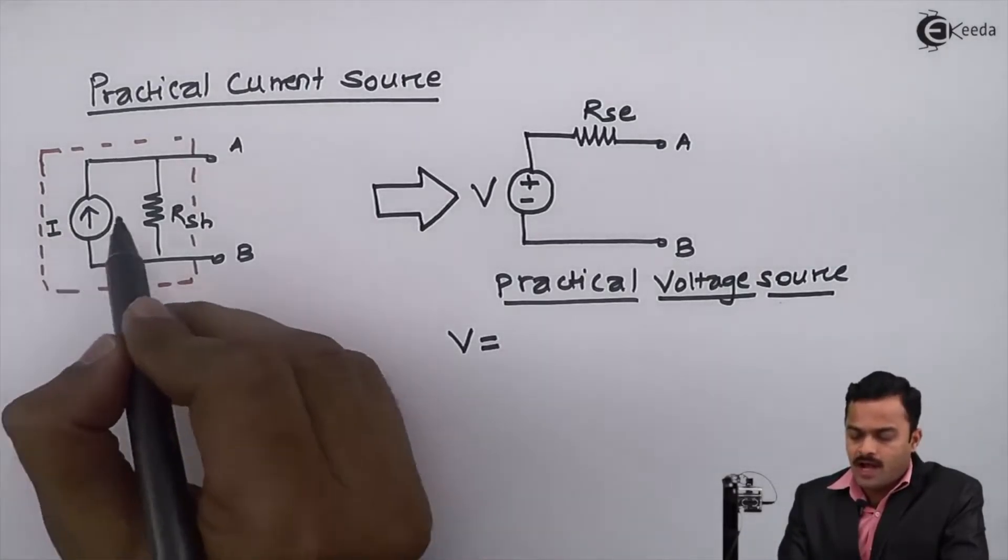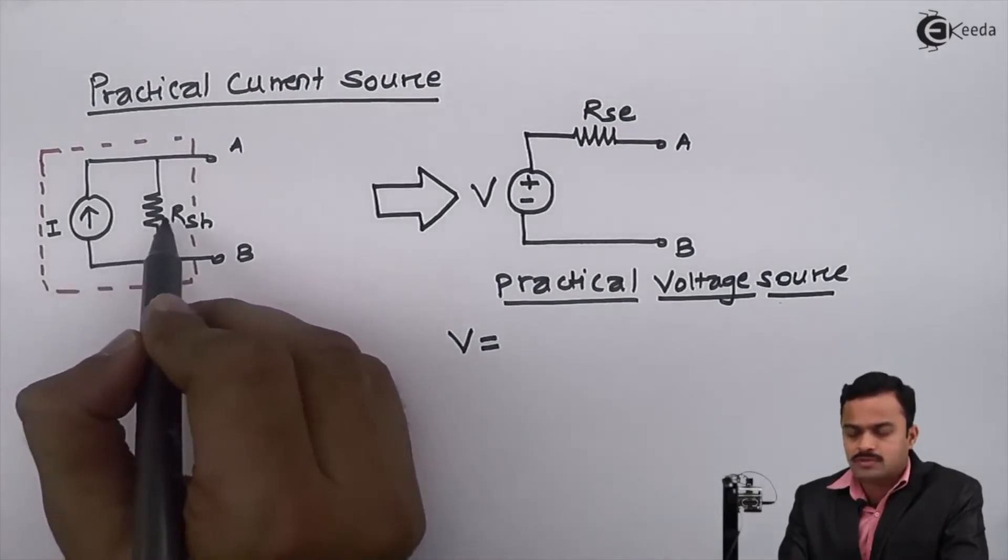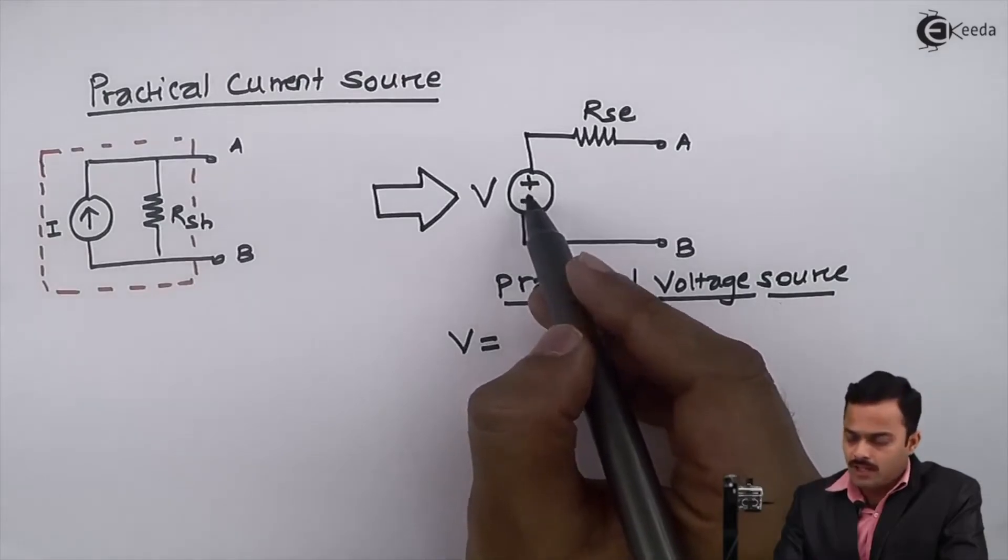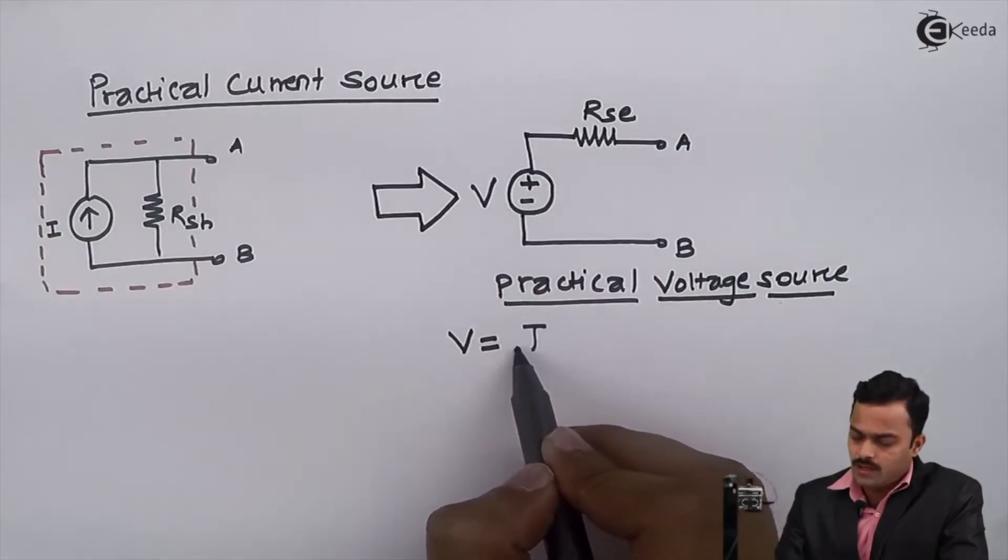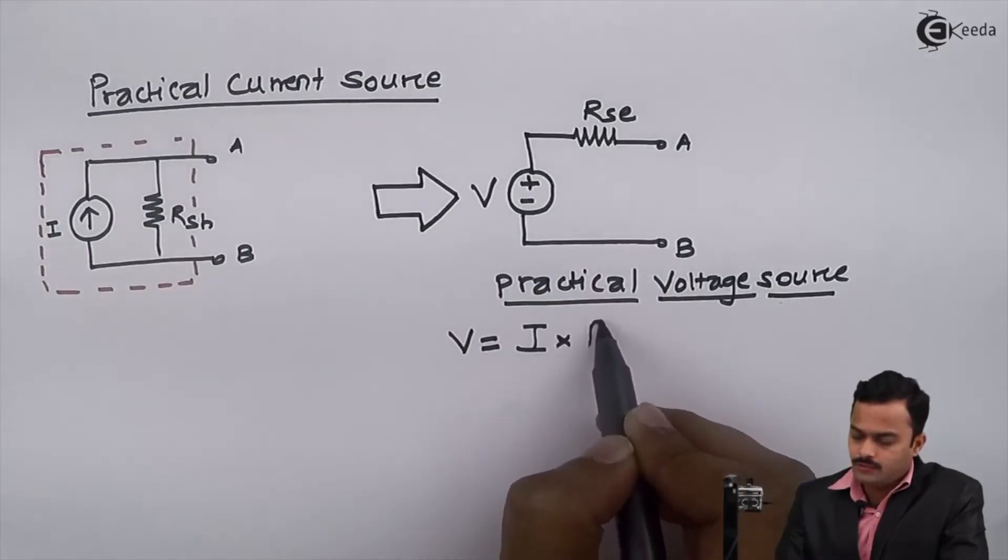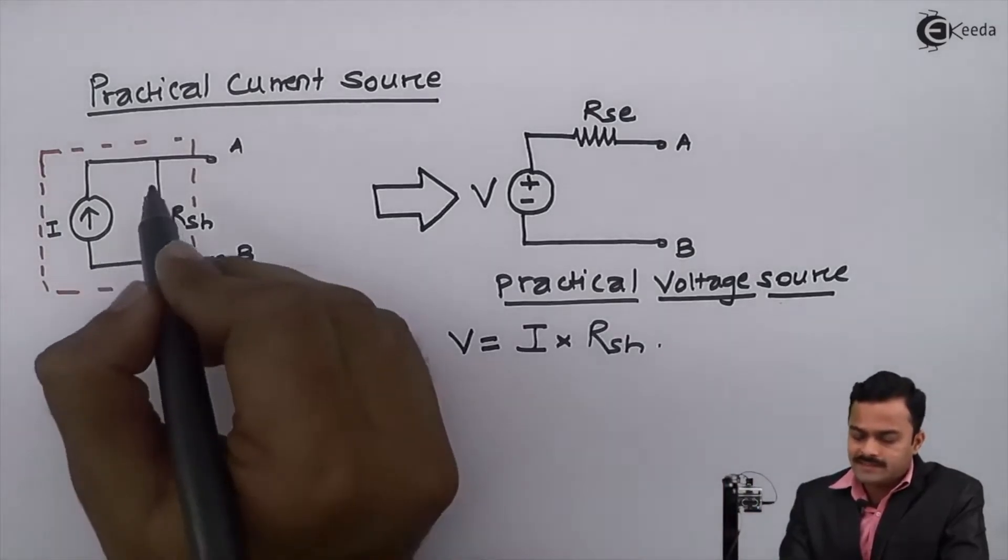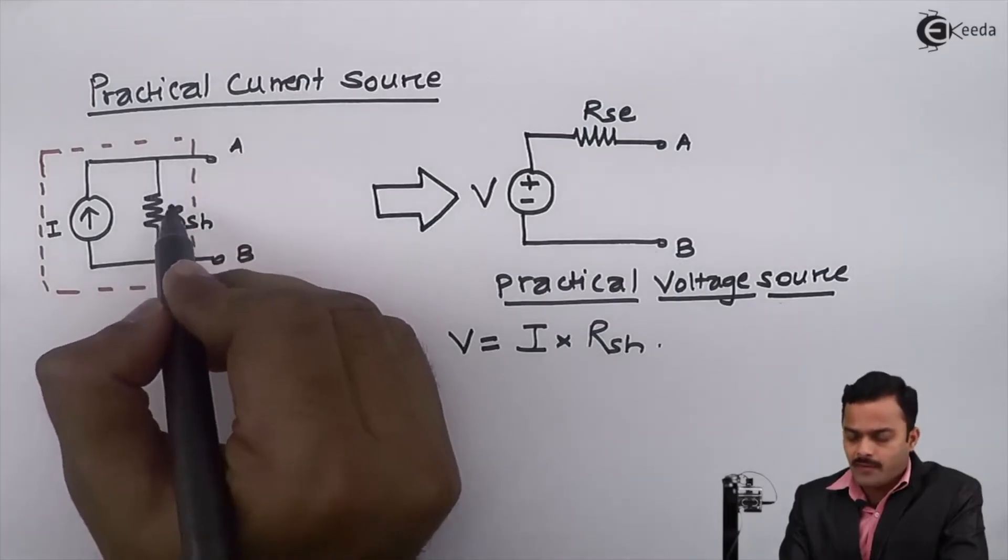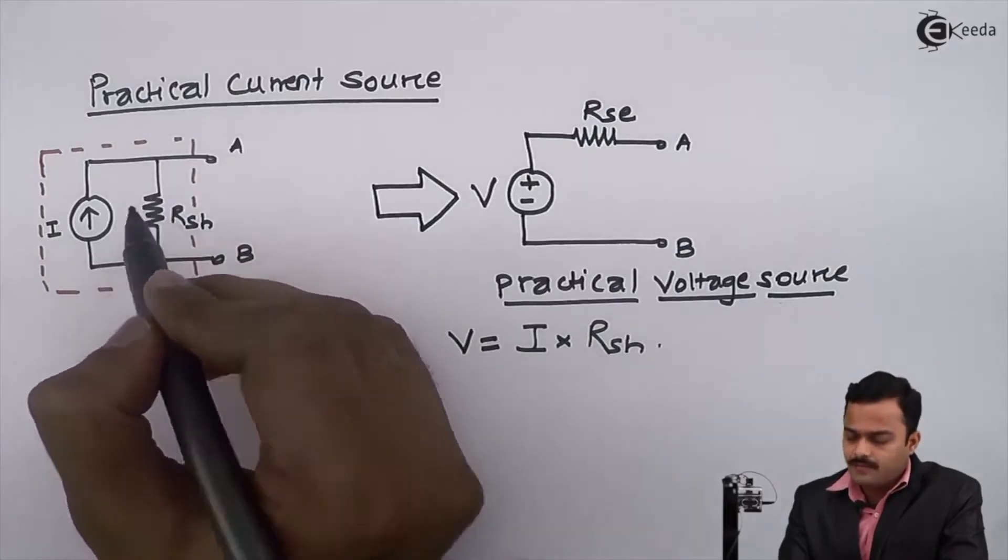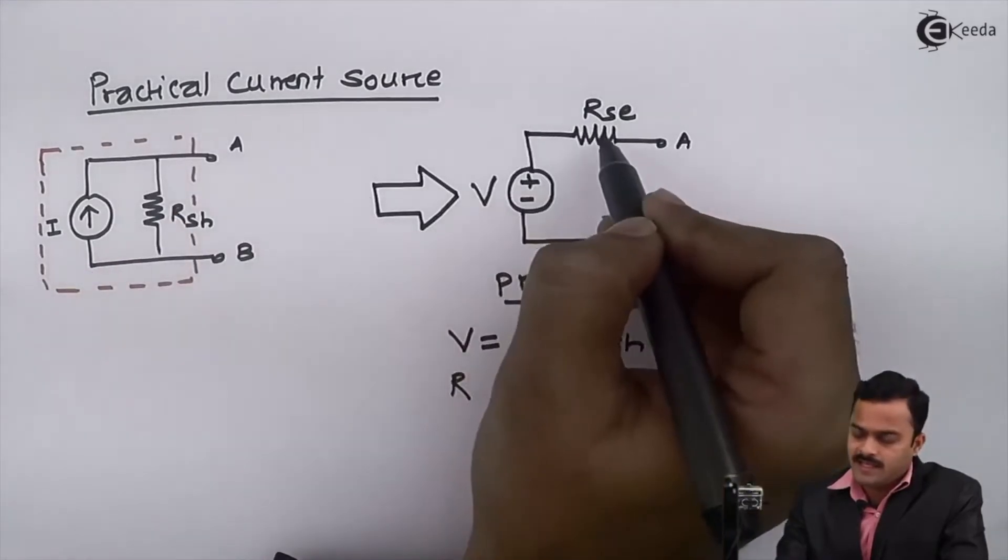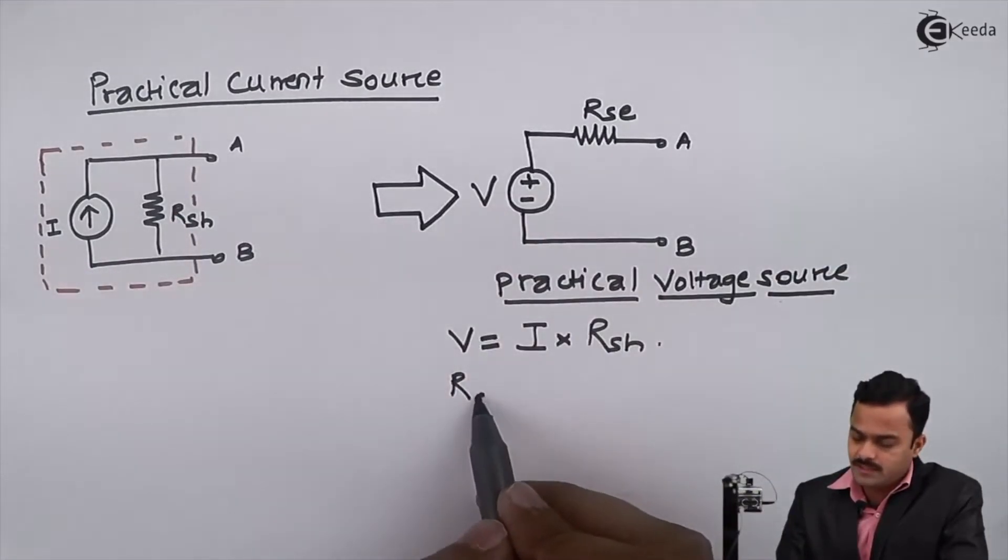Multiplication of I and RSH. Simple Ohm's law you have to apply and get this equivalent voltage value will be equal to I into RSH. Whatever resistor we were having with the current source, same resistor you will get. Only thing is that here it is parallel, but in case of a voltage source it will be series. The value will be same as RSH.